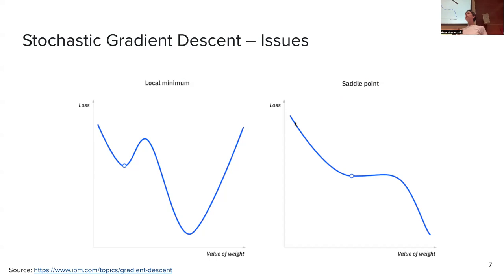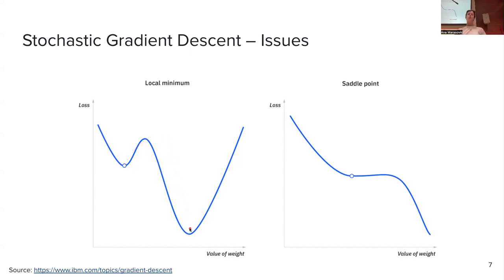Our loss functions — when we minimize negative log likelihood — are not convex with respect to the weights. This means we don't have that nice situation with gradient descent where you just have a valley and by stepping downward you reach a global minimum. With neural networks you have local minima: if you start somewhere and go downward, you can get stuck at a local minimum where the gradient becomes zero, and you never reach the global minimum.